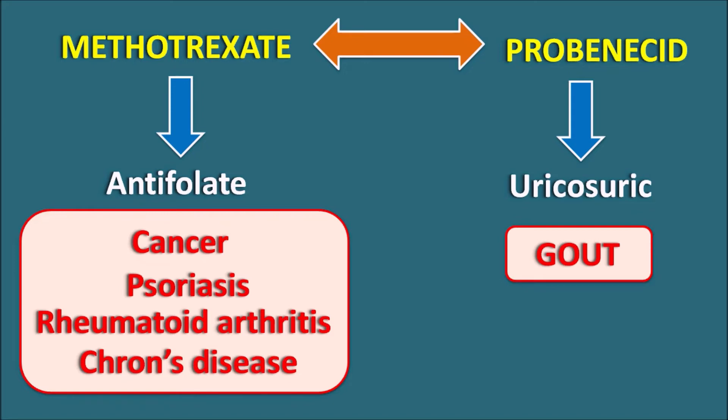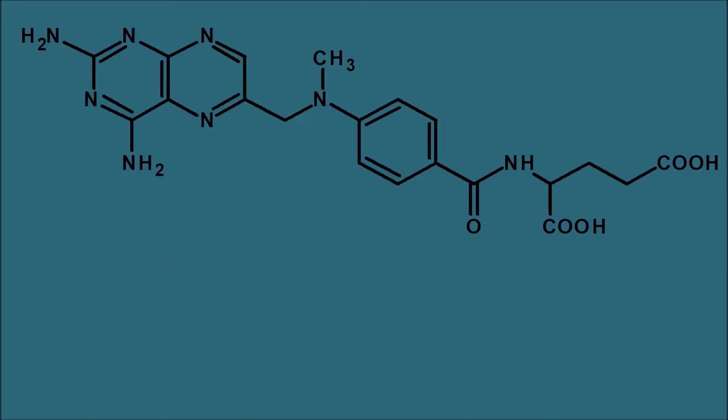It is not a pharmacodynamic interaction — it is a pharmacokinetic interaction where Probenecid interacts with the excretion of Methotrexate. Let us look at the structure of Methotrexate, which has three important moieties: the pteridine moiety, the para-aminobenzoic acid moiety, and the glutamate moiety.